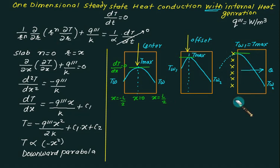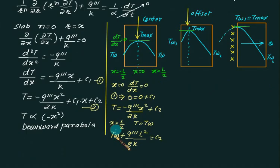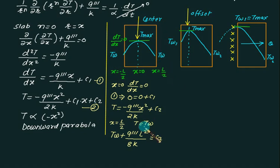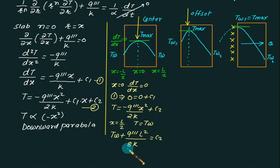For Case 1 (symmetric slab), putting x = 0 at center gives dT/dx = 0, so C1 = 0. The temperature equation reduces to T = -q‴x²/(2k) + C2. Substituting x = L/2 with T = Tw (since it's a square term, x = -L/2 gives the same result), we get C2 = Tw + q‴L²/(8k), and the equation is complete.